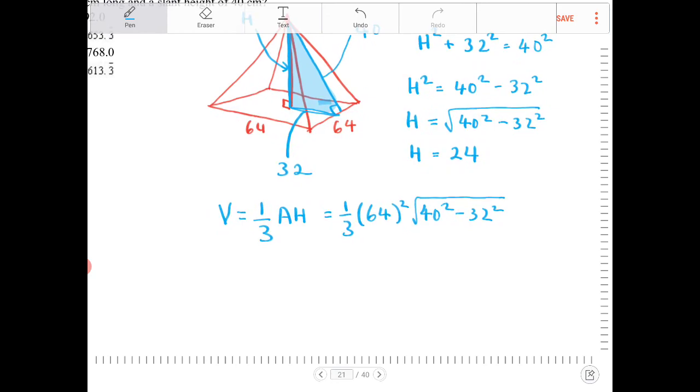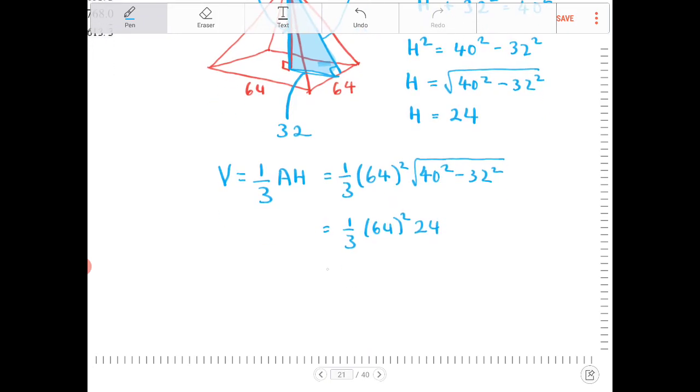So this is going to equal 1/3 × 64² × 24. And 1/3 of 24, that's just 8. So it's 64² × 8.